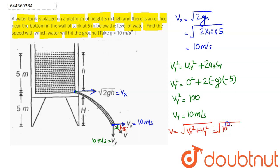That is, √(10² + 10²), which comes out to be 10√2 meters per second. So the speed with which it will hit the ground comes out to be 14.14 m/s. This is our answer.